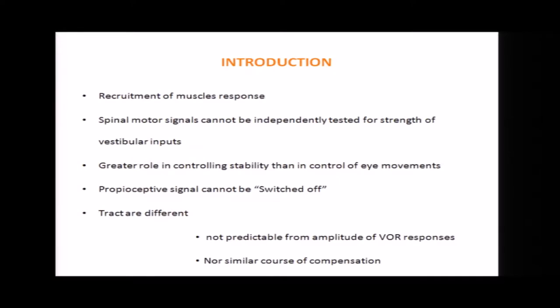Unlike ocular reflexes, proprioceptive reflexes cannot be switched off — which means that if proprioception from the ankle is deficient, it is taken over by the knee or the hip. And because of the difference in the site of origin of the vestibular-spinal tract and the pathway along the brainstem, you cannot quantify the contribution of the vestibular-spinal system from the amplitude of the vestibular response alone.